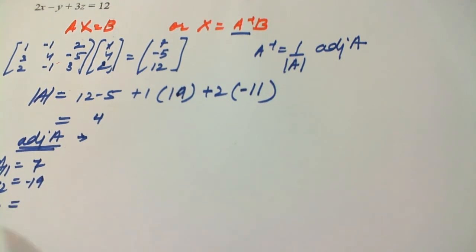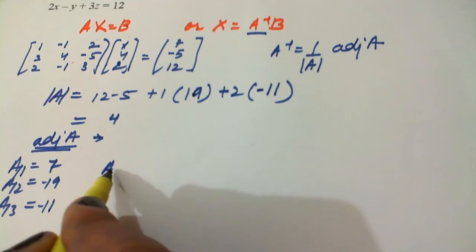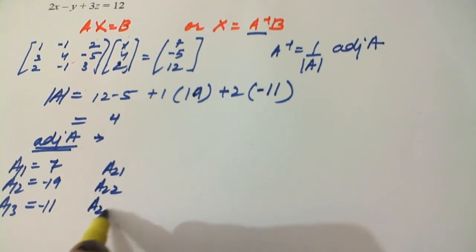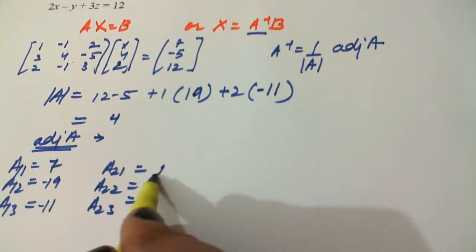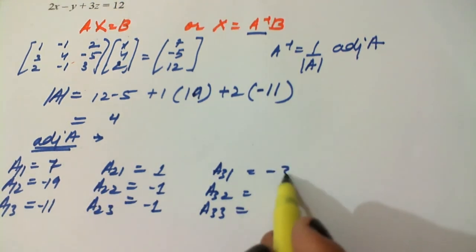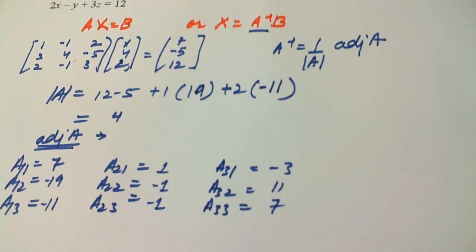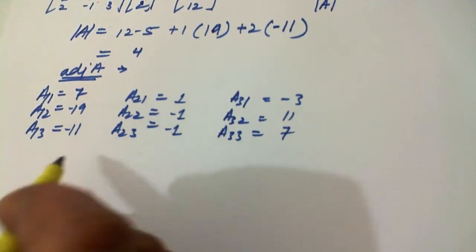We have A₁₁ equals to 7, A₁₂ minus 19, A₁₃ turns out to be minus 11, and similarly the others, that is A₂₁, A₂₂, A₂₃, through simple calculation based on your questions, we can calculate them as 1, minus 1, and minus 1. And A₃₁, A₃₂, A₃₃ will be minus 3, 11, and 7.